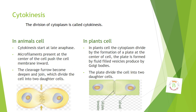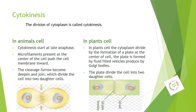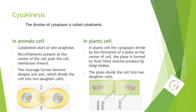Cytokinesis. The division of cytoplasm is called cytokinesis. In animal cells, cytokinesis starts at late anaphase. Microfilaments present at the center of the cell push the cell membrane inward. The cleavage furrow becomes deep and joins, dividing the cell into two daughter cells.